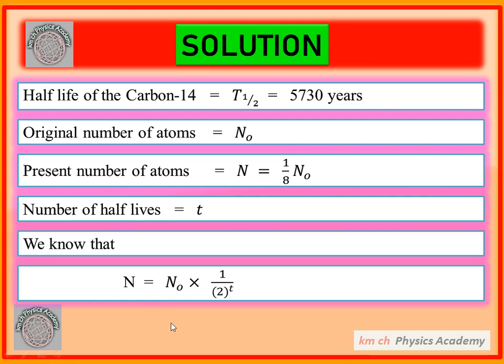Toh is mein values put kar diethe hai. Yeh N kitna hai hamare paas? Yeh one over eight N₀ hai, yani aath wahin hissa ho gaya hai N₀ ka, toh is ki jaga one over eight N₀ laga diethe hai.